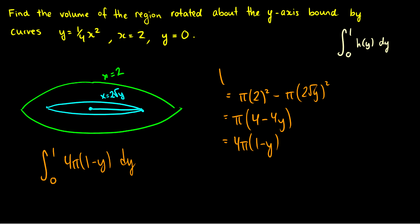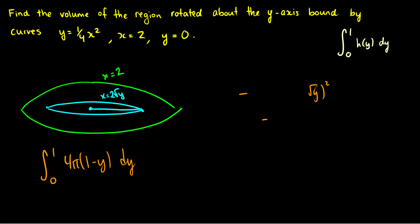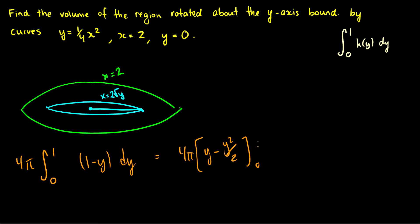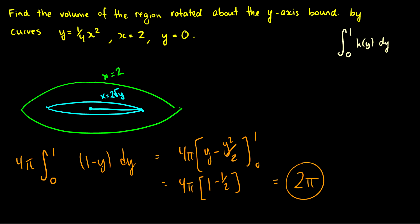Let's calculate this. Factoring out 4π, we integrate (y − y²/2) from 0 to 1, which equals 4π times (1 − 1/2) = 4π · (1/2) = 2π. So the volume of the region rotated about the y-axis is 2π.